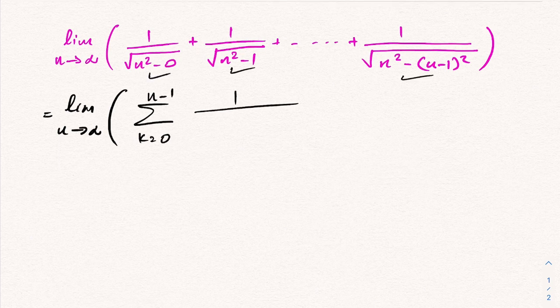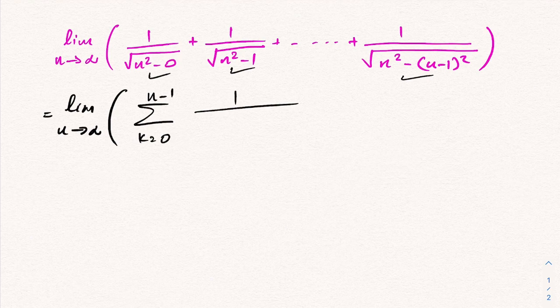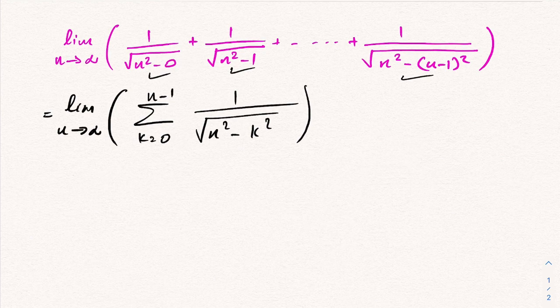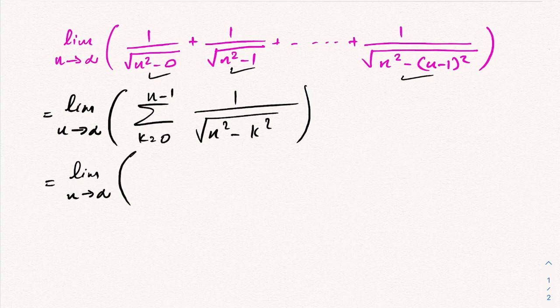Then limit n approaches infinity. Now here I am going to take n² as a factor, so we have 1 over n, sum of k equals 0 to n minus 1, 1 over the square root